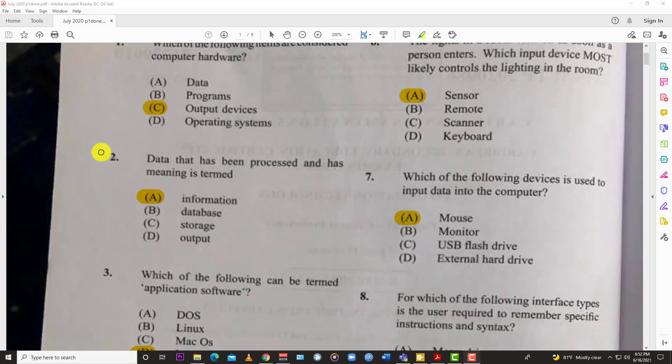Number two: data that has been processed and has meaning is termed? Of course, information. Information is data you can understand that's already been processed.